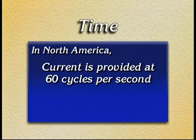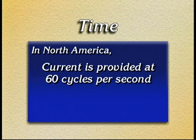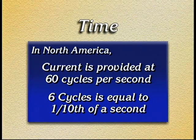Time in resistance spot welding is expressed in cycles. Cycles are units based on the frequency of alternating current. In North America, current is provided at 60 cycles per second, so six cycles is equal to one-tenth of a second.